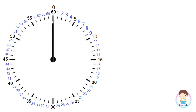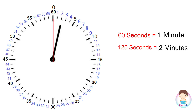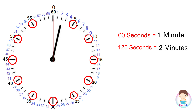The time is read based on which hand is pointing at which mark. Once the second hand completes one full rotation from 0 to 60 — that means 60 seconds — the minute hand moves to the first mark, showing one minute is completed. After the next 60 seconds, the minute hand moves to the second mark, meaning two minutes are completed. To calculate minutes more easily, we have bolder marks at every five-minute interval — skip counting by five: 5, 10, 15, 20, 25, 30, 35, 40, 45, 50, 55, 60.